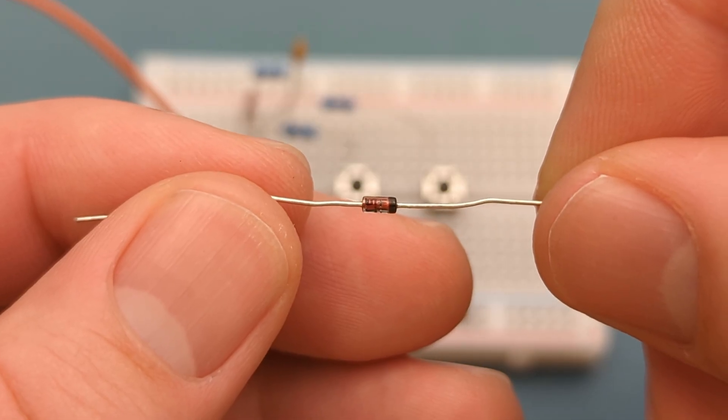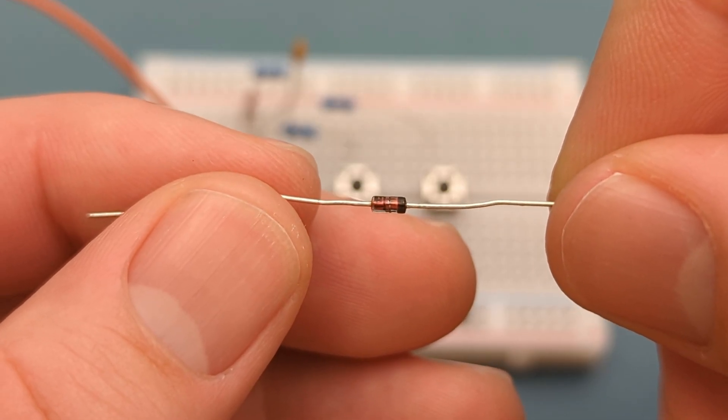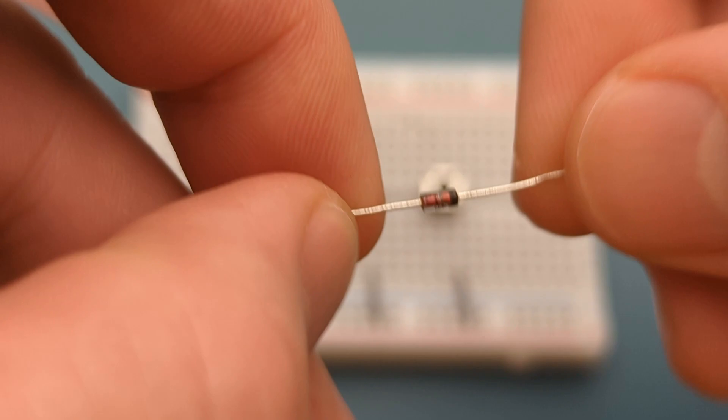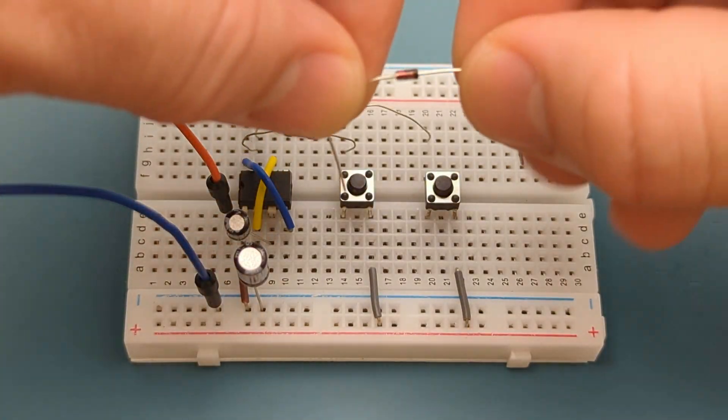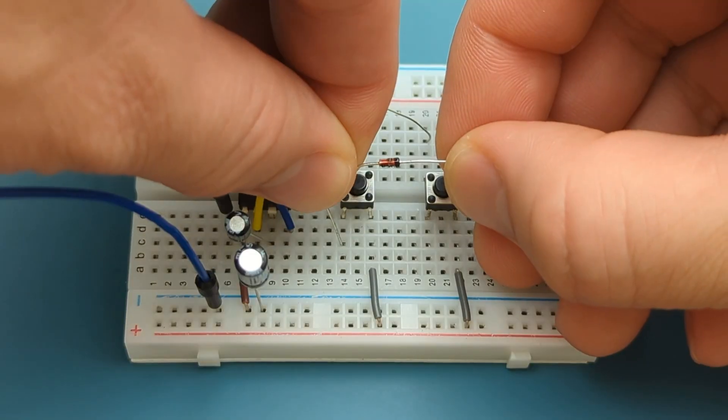Insert a 1N4148 diode in the same row as one leg of the first switch and one leg of the second switch. The cathode is oriented towards the second switch.